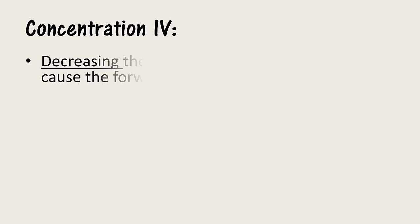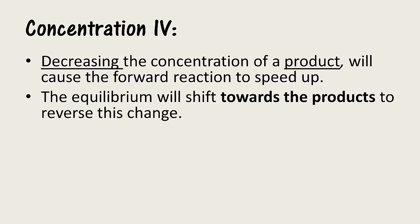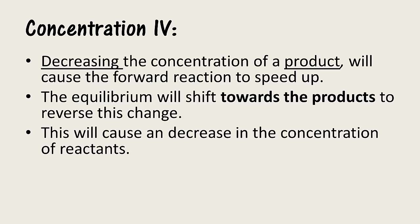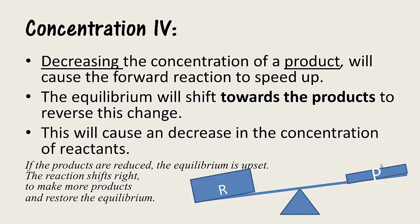The last effect: decreasing the concentration of a product will cause the forward reaction to speed up. The equilibrium will shift towards the product side to reverse this change and minimise the effect, restoring some of the products. This will cause a decrease in the concentration of the reactants. On the seesaw model, if the products are reduced by making the box smaller, this upsets the equilibrium balance. Some of the reactants have to get used up to form products, so the reaction shifts to the right, making more products and restoring equilibrium balance. The final concentrations will be slightly different than before, but the value of the equilibrium constant K will be the same.